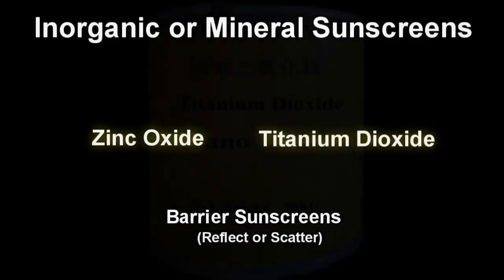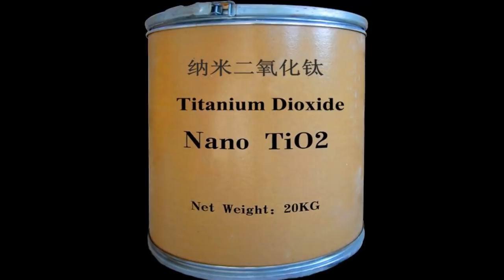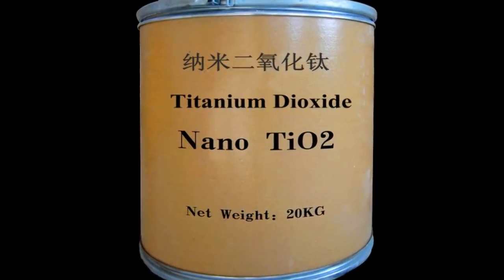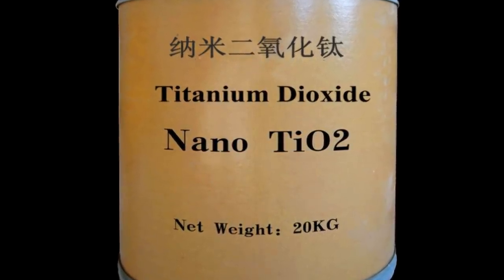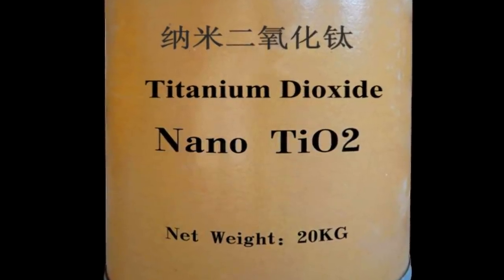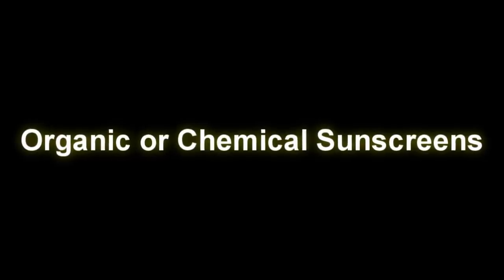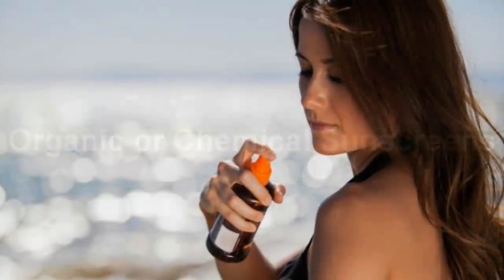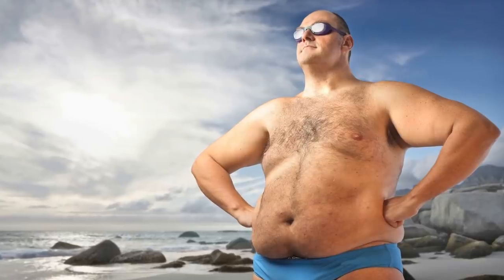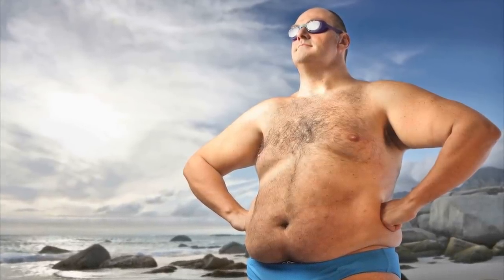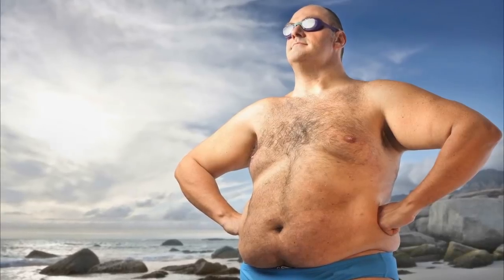However, newer zinc and titanium-based sunscreens are micronized — also referred to as nanoparticles of zinc oxide or titanium dioxide — and actually become invisible when rubbed on, as micronization appears to reduce the scatter and reflectivity of the visible portion of the electromagnetic spectrum. On the other hand, the organic or chemical sunscreens are either clear sprays or white lotions that always produce an invisible UV protective layer on the skin surface when properly applied.